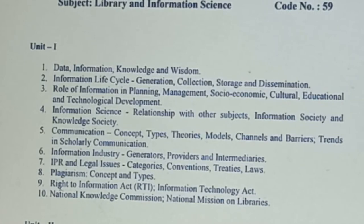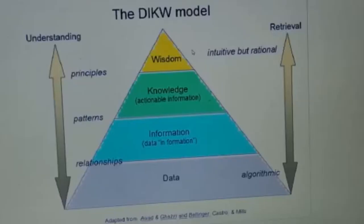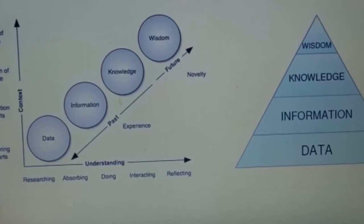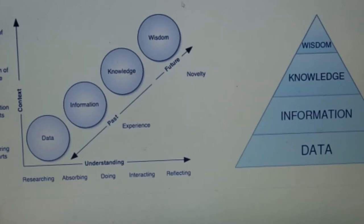Coming back to Unit 1: data, information, knowledge, and wisdom. You can see here a pyramid — this is called the DIKW model, that is D for data, I for information, K for knowledge, and W for wisdom. Wisdom has the greatest value whereas data has the least value. This pyramid and graph model shows data, information, knowledge, and wisdom in ascending order of value.